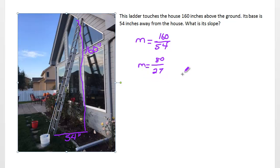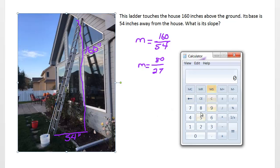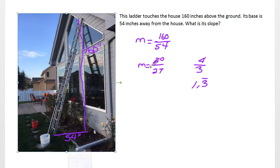So which was steeper? The staircase before with a slope of 4/3, or this ladder with a slope of 80/27? 4/3 was 1.3 repeating, 80/27 is just under 3. When you compare two slopes, 3 is larger than one and a third, so the ladder is the steeper of the two.